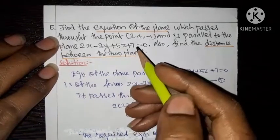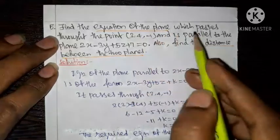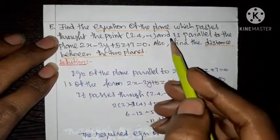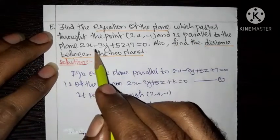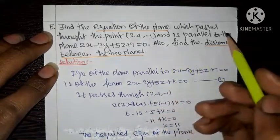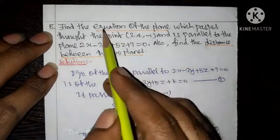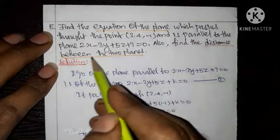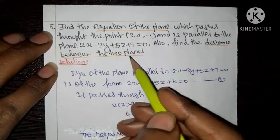Exercise 6.9, question number 5: Find the equation of the plane which passes through the point (3, 4, -1) and is parallel to the plane 2x minus 3y plus 5z plus 7 equal to 0. Also find the distance between the two planes.